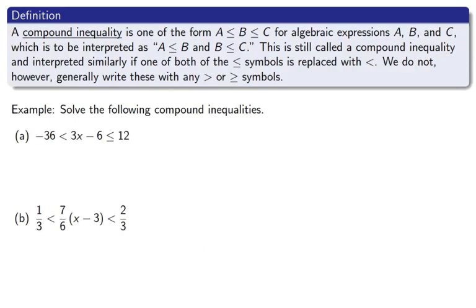Next we have what we call a compound inequality. This simply means if we write a ≤ b ≤ c, the first inequality holds and the second inequality holds. Often what we do is figure out a range of numbers that x stands between. We typically write these only with less than or less than or equal to symbols, not with greater than symbols.